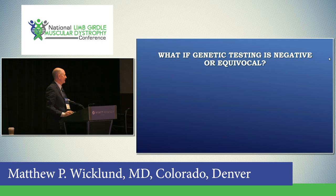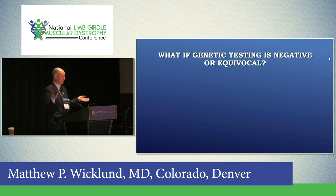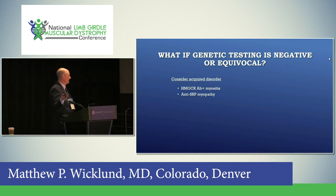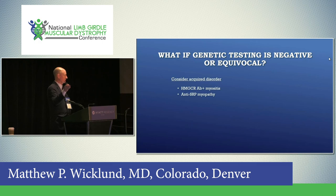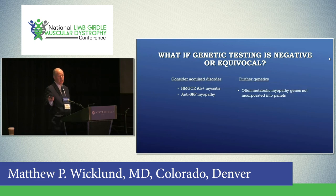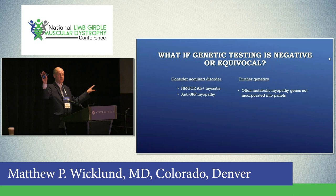What if you don't get an answer from genetic testing? Most panels are now 100 to 150 genes, and next year they'll likely expand to 500 to 1,500 genes per panel. One answer is that maybe this is not a genetic disorder — recently it's been described that patients with 5 to 10 years of slowly progressive weakness followed as LGMD actually have a treatable disorder due to an autoantibody. You can do further genetics, consider metabolic myopathies that can look like LGMD, especially in older-onset patients.